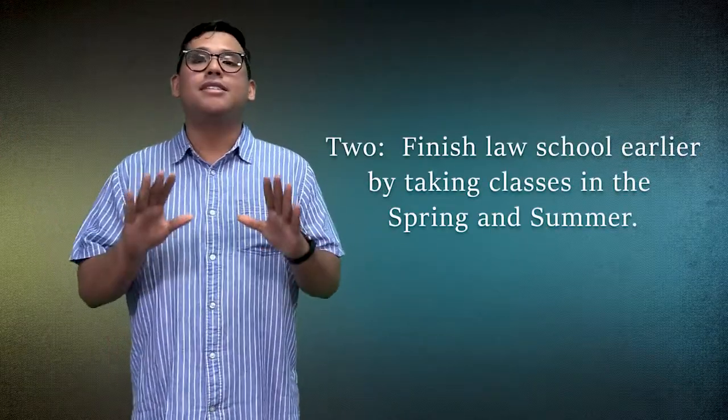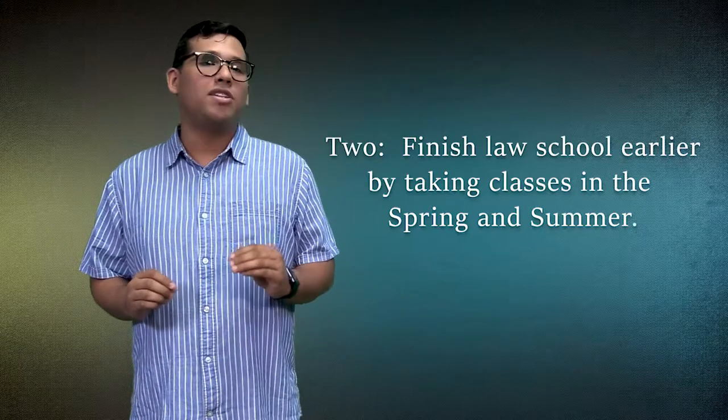Number two, since California Western operates on a trimester calendar, you're likely to finish law school in only two and a half years in our spring term. You catch up with students who began the term before you did, because spring students take classes in the spring and summer term.